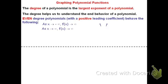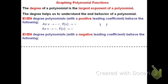If instead it's an even degree polynomial with a negative leading coefficient, then it's going to do the opposite for the end behavior. As x goes to negative infinity, f goes down towards negative infinity, and as x goes to positive infinity, f will still go down towards negative infinity, meaning the end behavior looks like this.